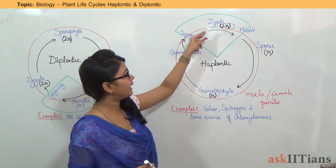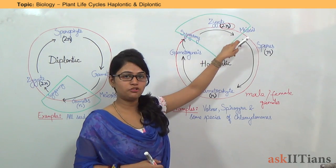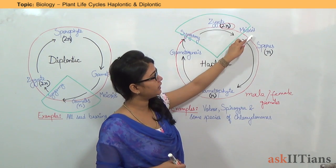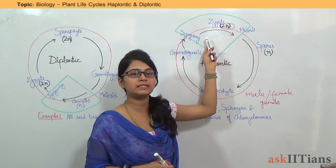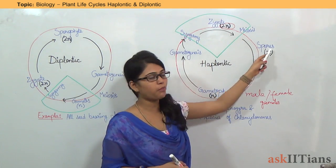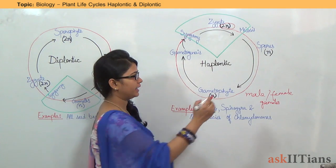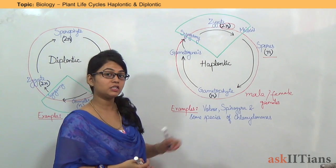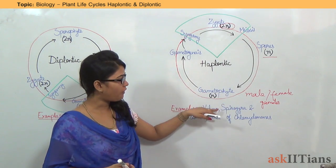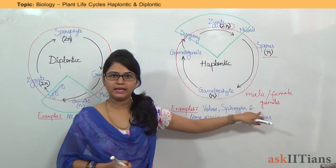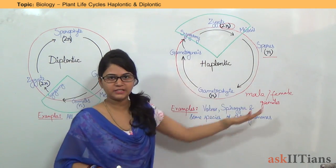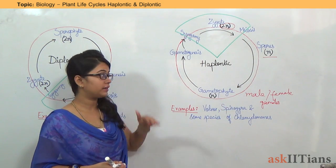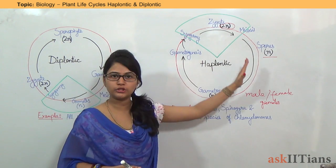This zygote will undergo division through the process of meiosis, and after undergoing meiosis, this zygote will form spores. These spores are again haploid in nature, and these spores will in turn form male and female gametes. Because it is a life cycle, it will keep on going.